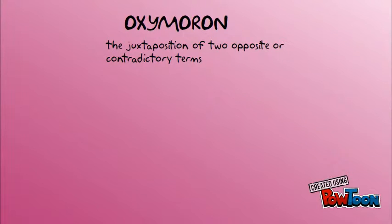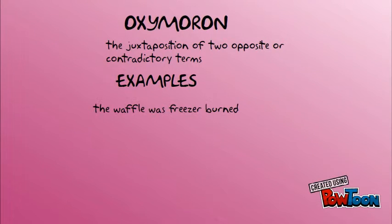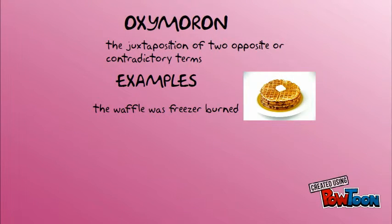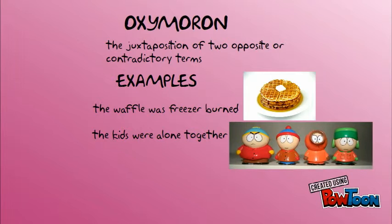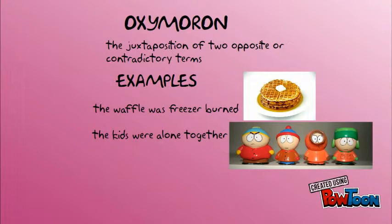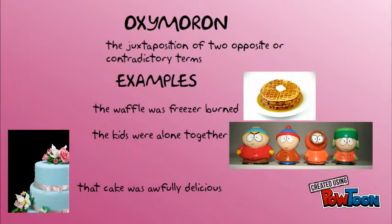An oxymoron is the juxtaposition of two opposite or contradictory terms. For example: the waffle was freezer burned, the kids were alone together, and that cake was awfully delicious. How can it be awful but delicious at the same time?